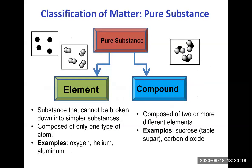A pure substance can be further classified as an element or a compound. Elements are substances that cannot be broken down into simpler substances and are composed of only one type of atom. Examples are oxygen (found as O2 in nature), helium (single atoms by themselves), and aluminum (only aluminum atoms packed together as a solid).